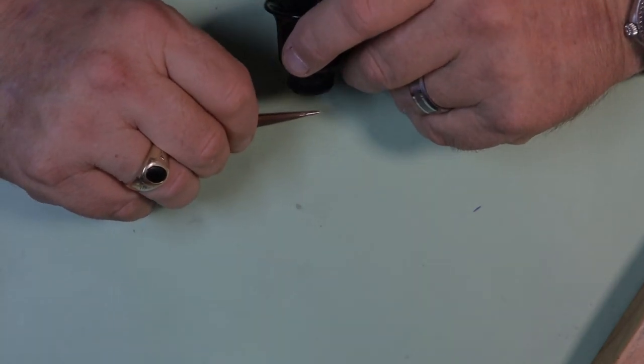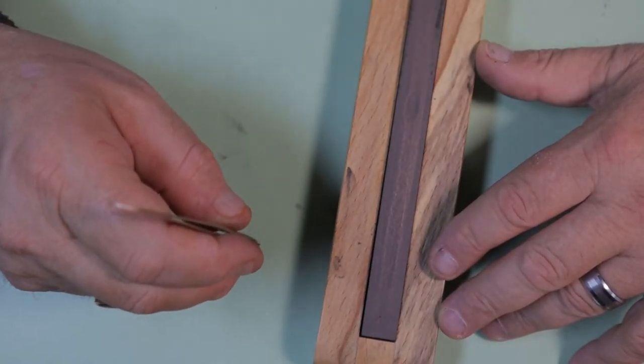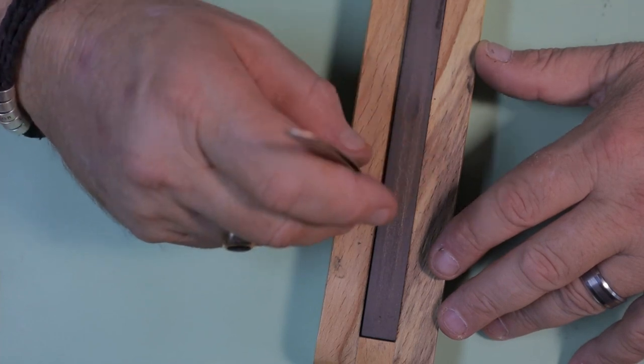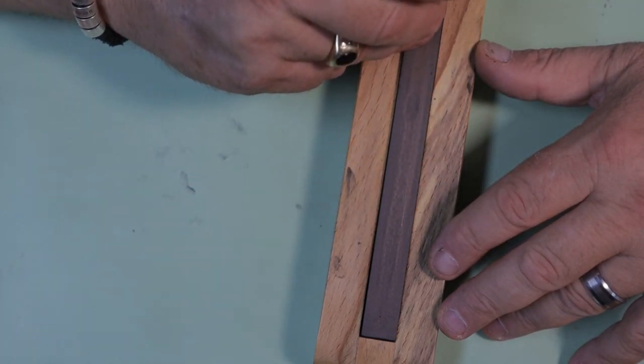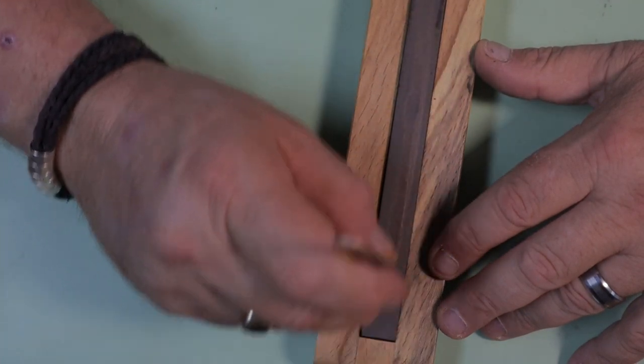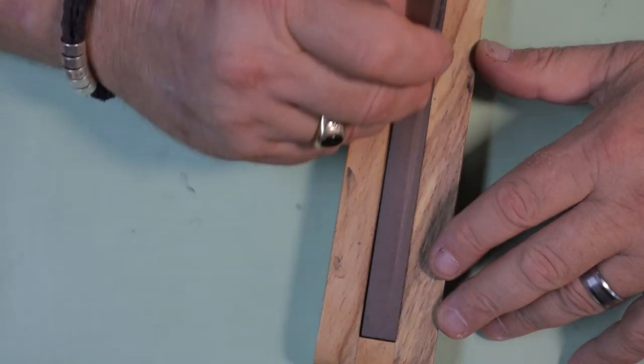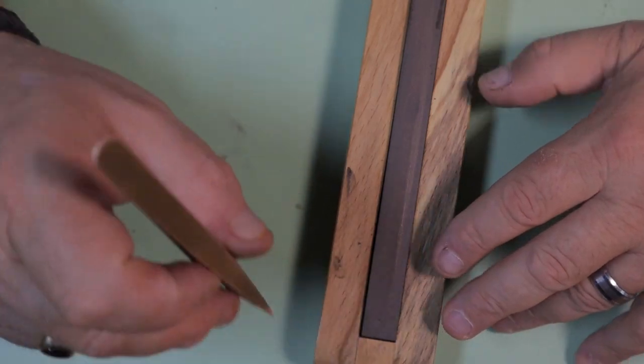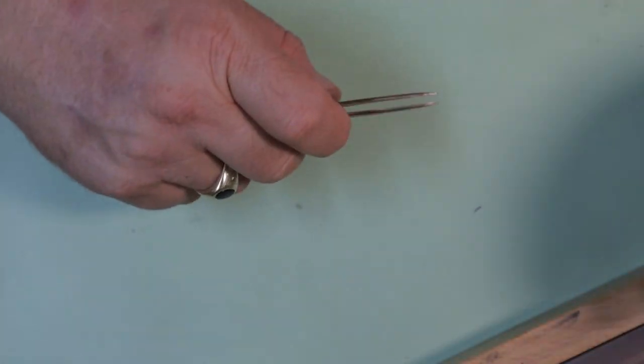Now once all the damage has been stoned off the tweezers now we need to get the tips even. So a couple ways to do it. One you can just draw the tip of your tweezers holding them at a 90 degree angle to the stone. You just give it a couple swipes and then check it with your loupe.